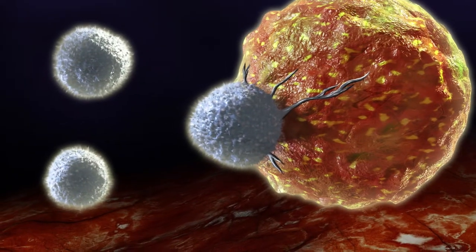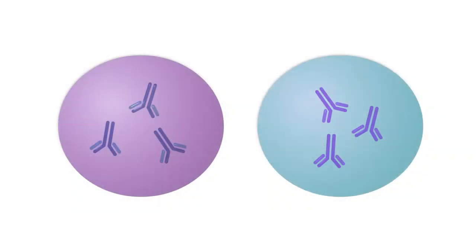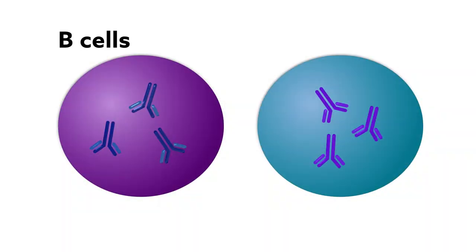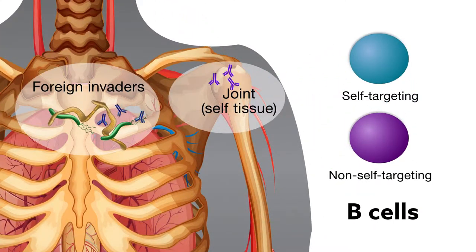Autoimmune diseases occur when the immune system turns against the body's own tissues. Immune cells, known as B-cells, play a primary role in these diseases, producing antibodies that target self-tissues instead of just foreign invaders.